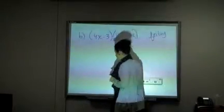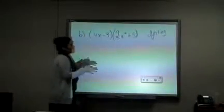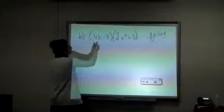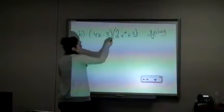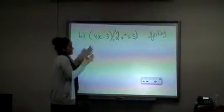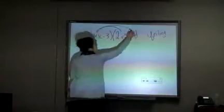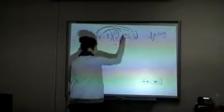If you want to use the foiling method, basically you're doing the same thing without doing the box. So you just need to make sure that every monomial is multiplied with each monomial. So you're going to make sure that you multiply this 4x with these two, and this minus 3 with these two.